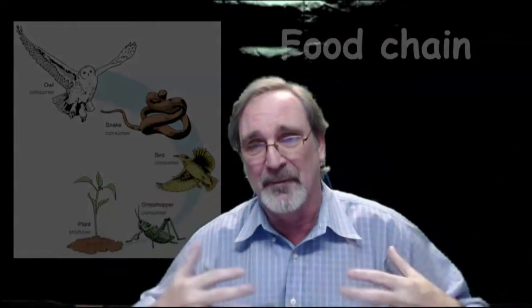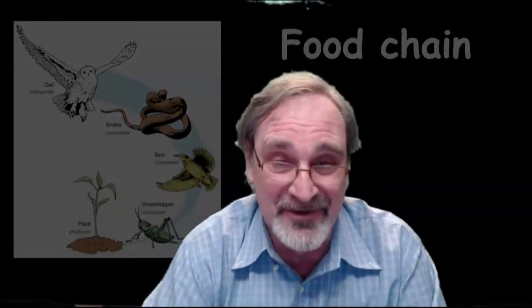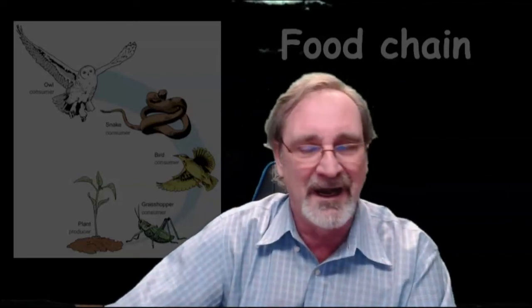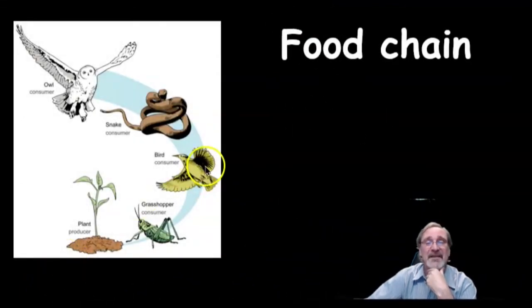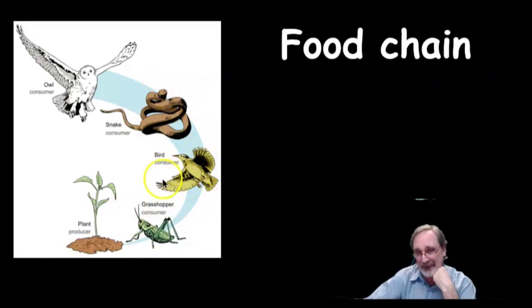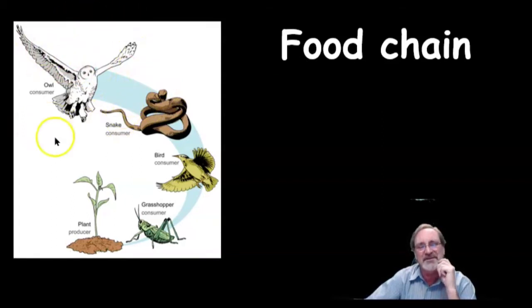So if the grasshopper gets eaten by the bird, then the bird gets the energy. Then maybe a snake is going to eat the bird and now it gets the energy. And then an owl comes by and eats the snake and now it gets the energy.